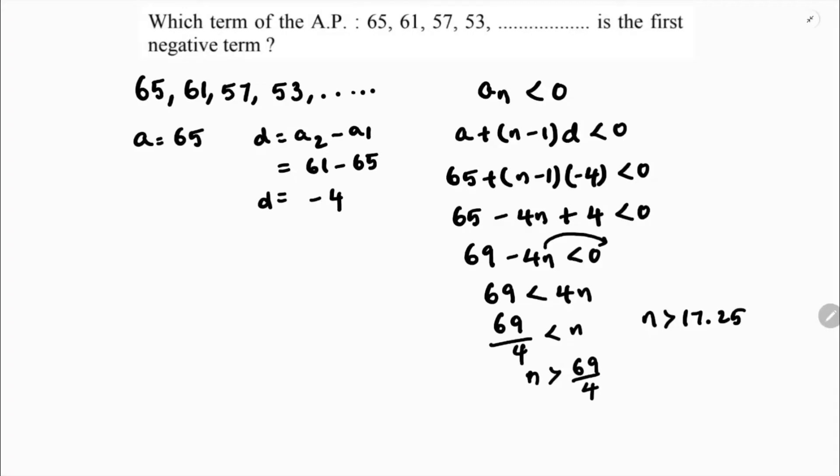So 17.25 means the next term will be the 18th term, so 18th term is first negative term.